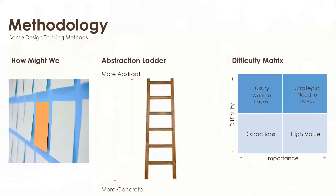Here are some design thinking methodologies you could apply to project implementations. The first is How Might We. This method creates an atmosphere for innovative solutions by reframing known challenges. How Might We questions engage out-of-the-box thinking to create a solution when the client doesn't know everything they want yet. You begin by identifying and outlining insights or pain points, then reframe those insights into questions starting with 'How Might We,' considering the underlying factors that may be driving them. By creating multiple How Might We questions, you have the chance to be innovative when considering a solution.